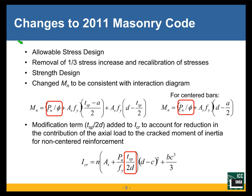Going through briefly the history of some changes related to out-of-plane design: from the 2008 to 2011 masonry code, in allowable stress design there was the removal of the one-third stress increase and recalibration of stresses. In strength design, we changed the formula for calculating the nominal moment under out-of-plane loading, and we'll look at this equation in more detail later.